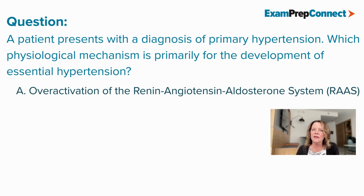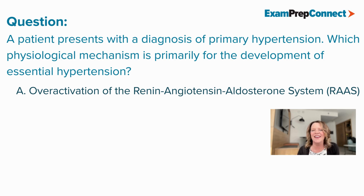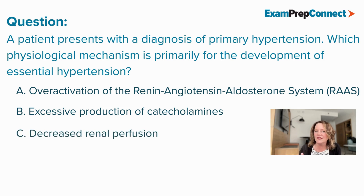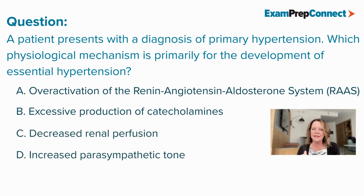Is it A, over-activation of the renin-angiotensin-aldosterone system, or RAAS? Is it B, excessive production of catecholamines? Is it C, decreased renal perfusion? And lastly, D, increased parasympathetic tone?